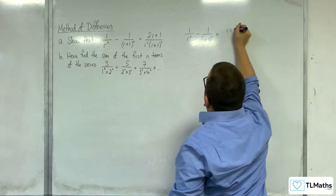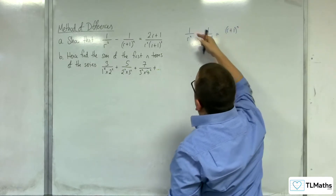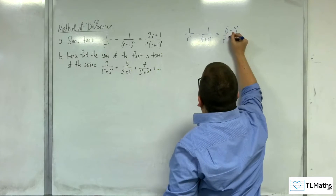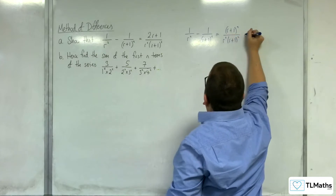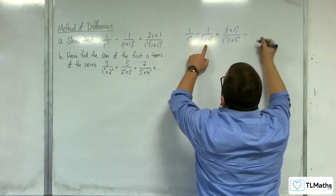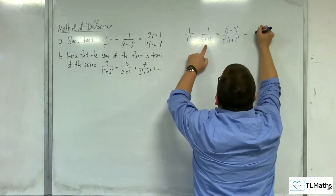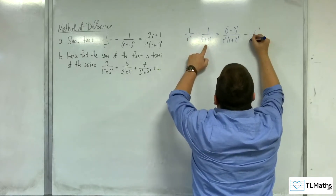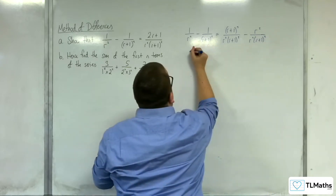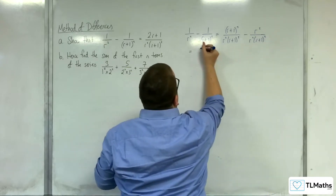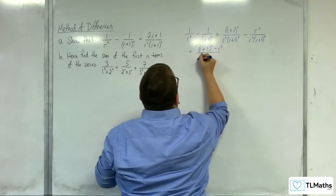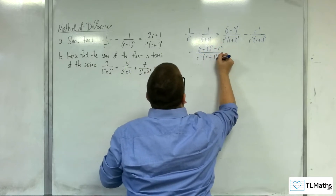This is equal to r plus 1 squared — multiplying the first fraction top and bottom by r plus 1 squared — take away r squared over r squared times r plus 1 squared, multiplying the second fraction top and bottom by r squared. Now they have a common denominator, so we've got r plus 1 squared take away r squared, all over r squared times r plus 1 squared.